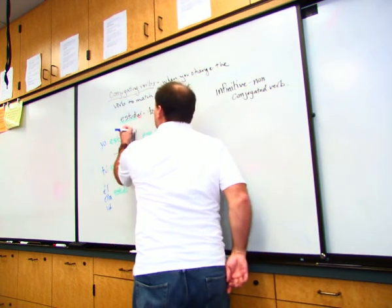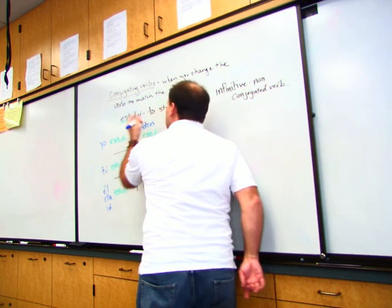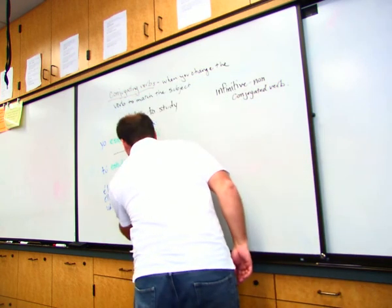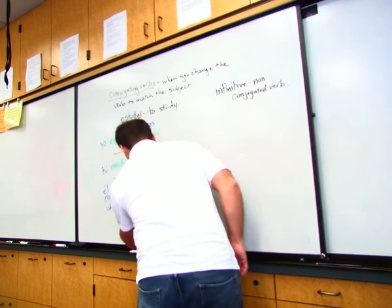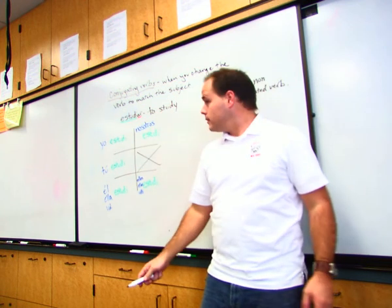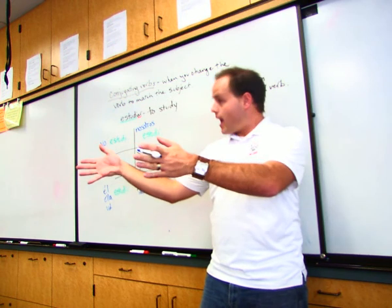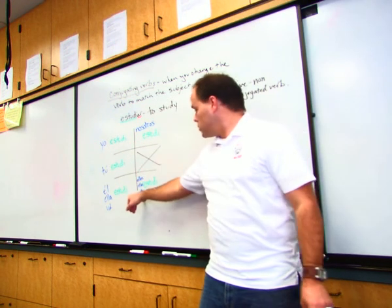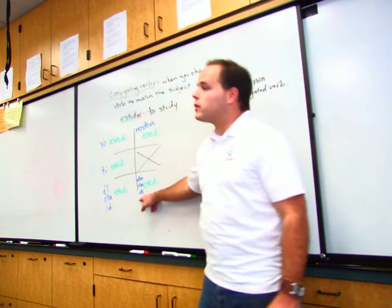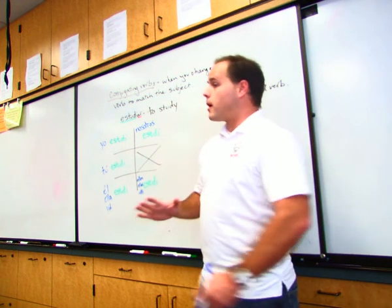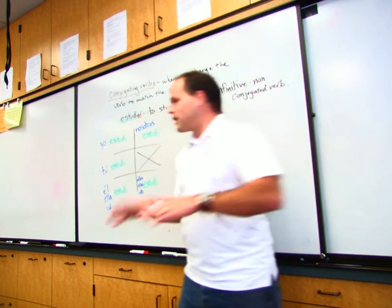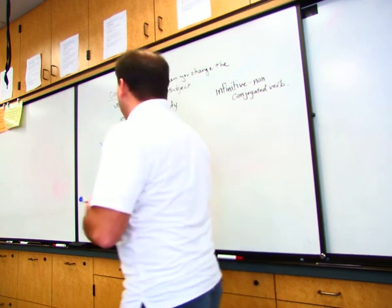Then up here, top right, what do we got? Nosotros. Yes. Nosotros. Which is? We. And then down here we've got ellos, ellas, ustedes. Ellos is? Remember how we set it up. First person. Second person. Third person. Singular, plural. Granted, usted, ustedes is the second person, but it falls under that third person category.